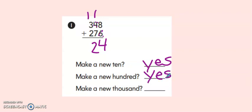And last, let's add the hundreds place. Three plus two plus one. Don't forget that new hundred at the top. Three, four, five, six. Six hundreds. Did I make a new thousand if I only had six hundreds? No, I did not. So the first step, I solved the problem and then I answered the questions.